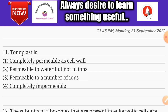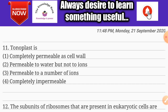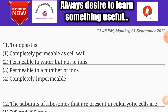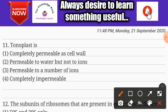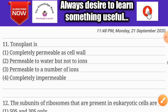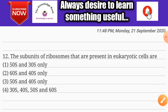Question number eleven: tonoplast is — options are completely permeable as cell wall, permeable to water but not to ions, permeable to a number of ions, and completely impermeable. The correct answer is option three: permeable to a number of ions.